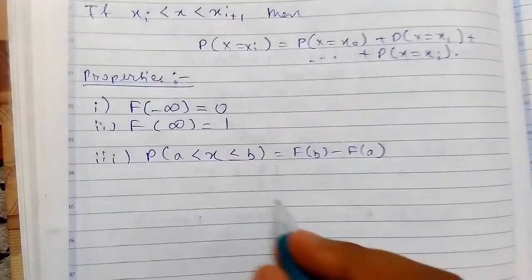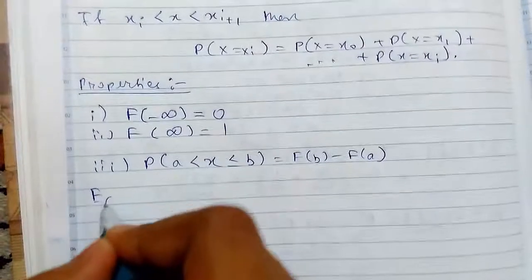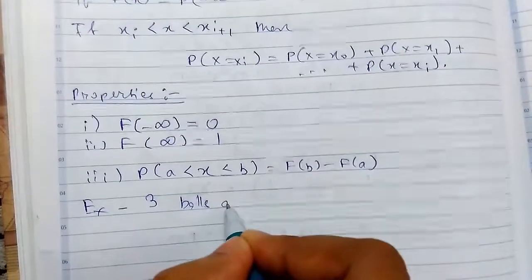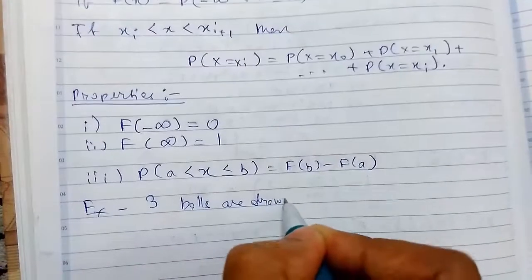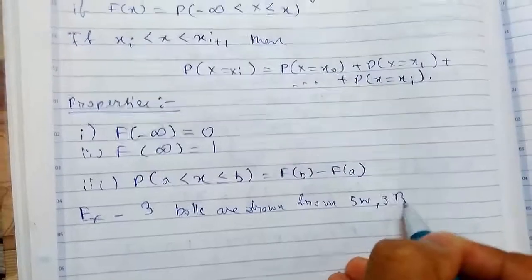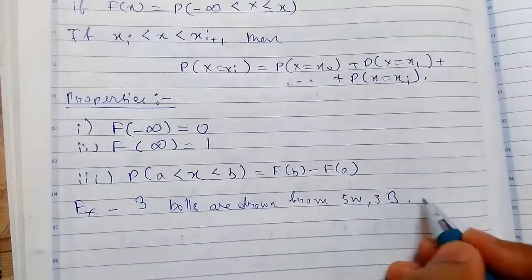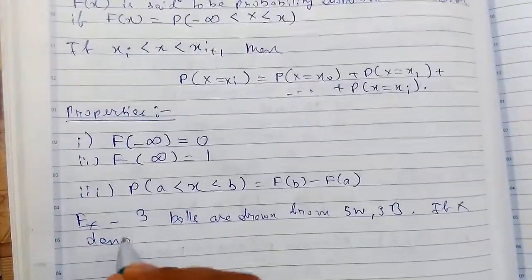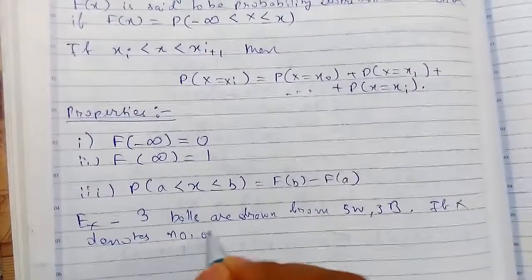So let us see an example to understand better. Suppose 3 balls are drawn from 5 white and 3 black.